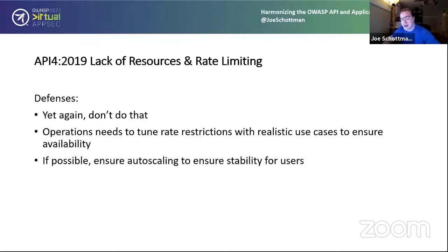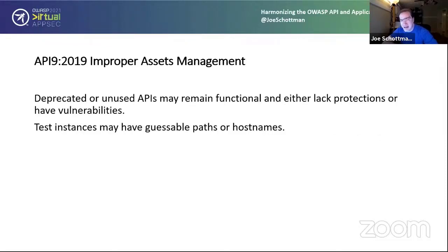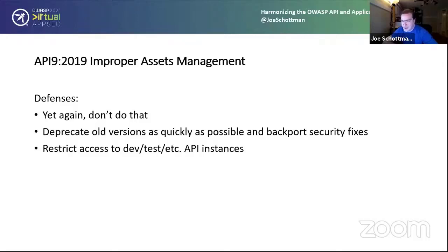Improper asset management is when you have older versions of an API or test APIs that remain functional and either lack the protections of the production API or have unpatched vulnerabilities. You may have test instances with default credentials or hostnames — don't do that. If you have an older version of an API, require customers to upgrade their mobile apps to use the newer version so you can retire the old ones. If you must keep old APIs online, back-port any security fixes to them, and make sure any dev or test API instances are properly locked down.